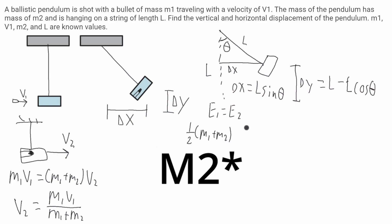It'll be one half m1 plus m2 because it's the kinetic energy of both of these moving together, and this will be v2 squared. This will be equal to just the gravitational potential energy at its maximum position.